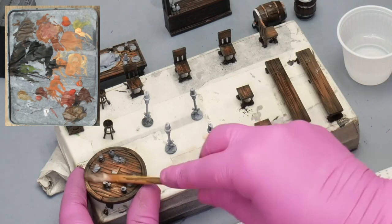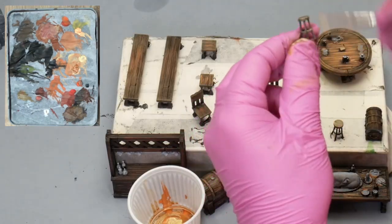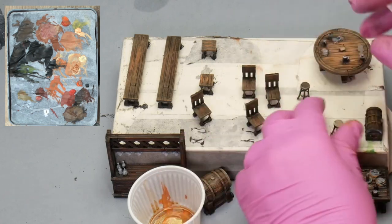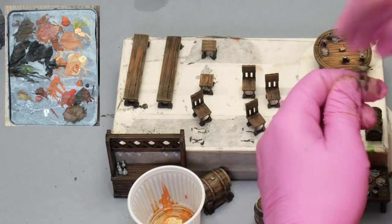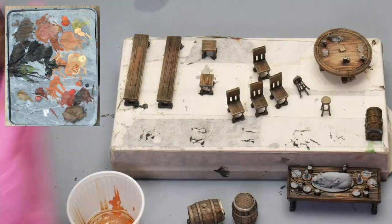After removing the excess wash, I will apply dry brush. For this I will use the colors beige and light orange on the more orange woods, as well as beige and orange brown on the more reddish wood in the counter.